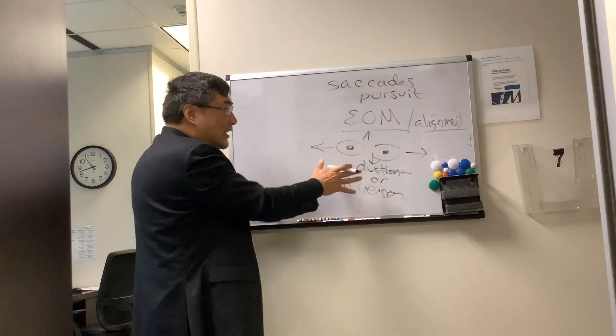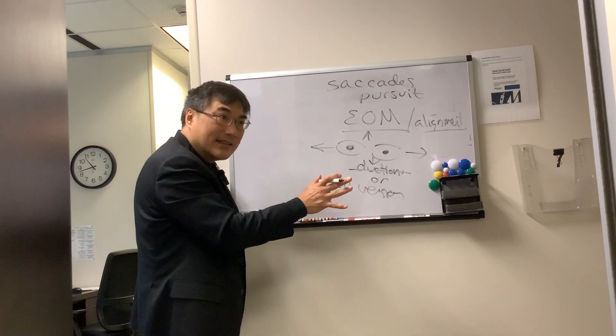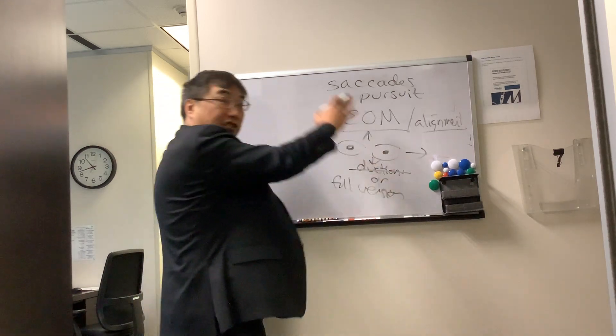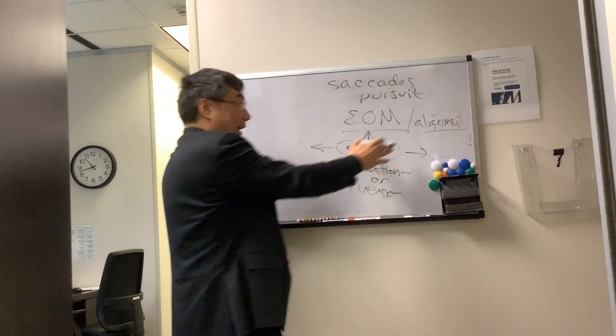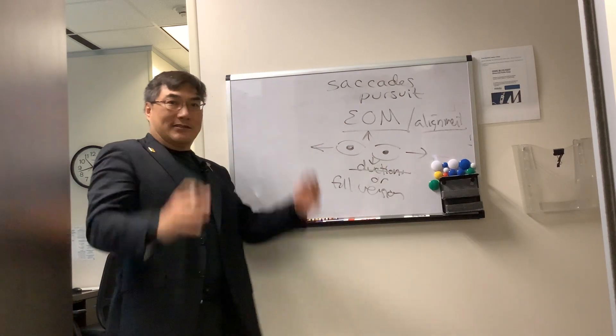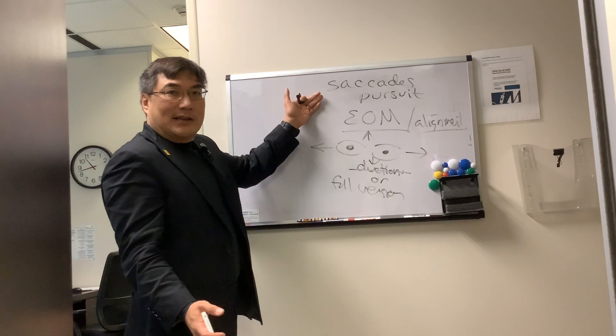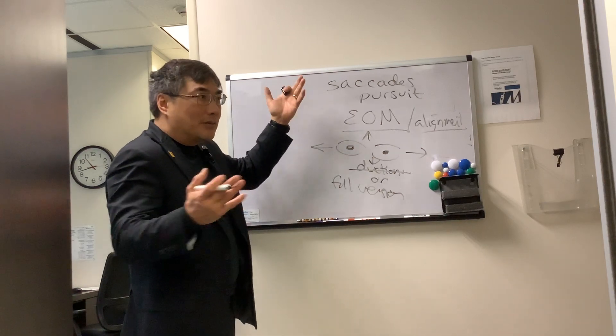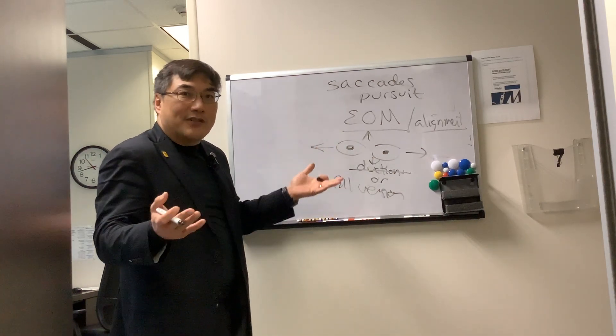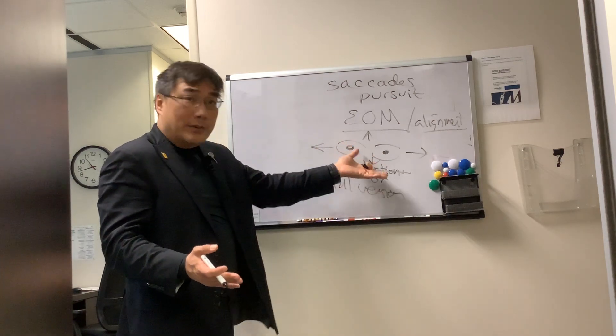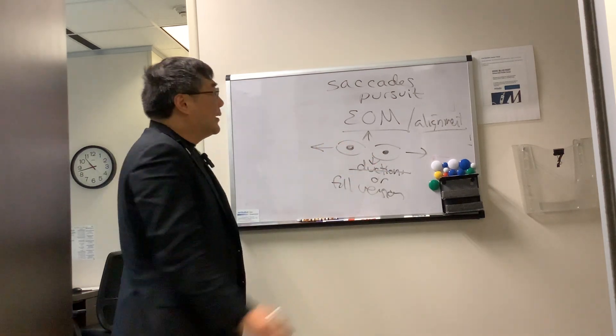So if someone's not complaining about double vision or jumping eye, then versions full and alignment is all you need. We don't really have to test the saccade and pursuit in that person because their complaint is I lost my vision. It's an afferent complaint. So testing the efferent system is kind of a waste of time. We do it because it's part of the exam.